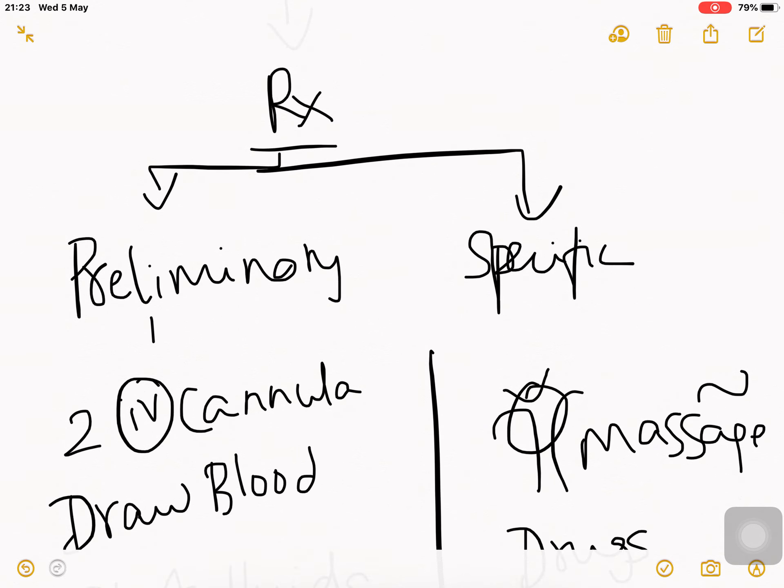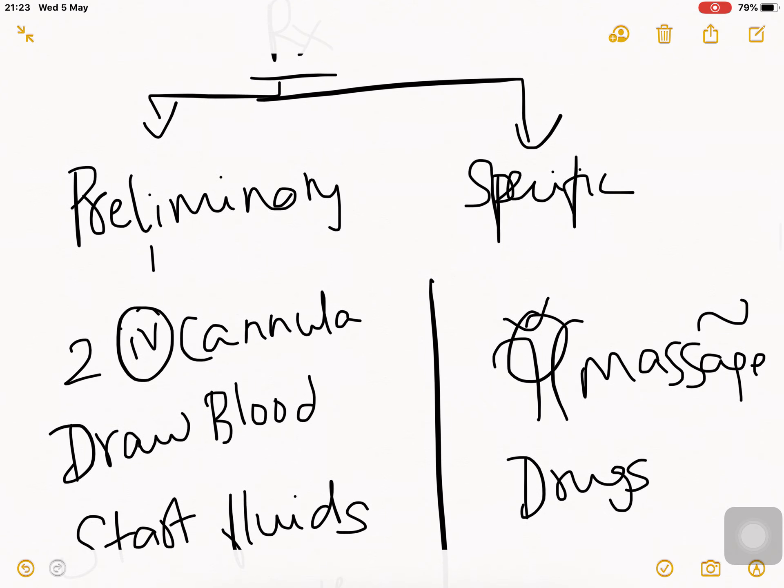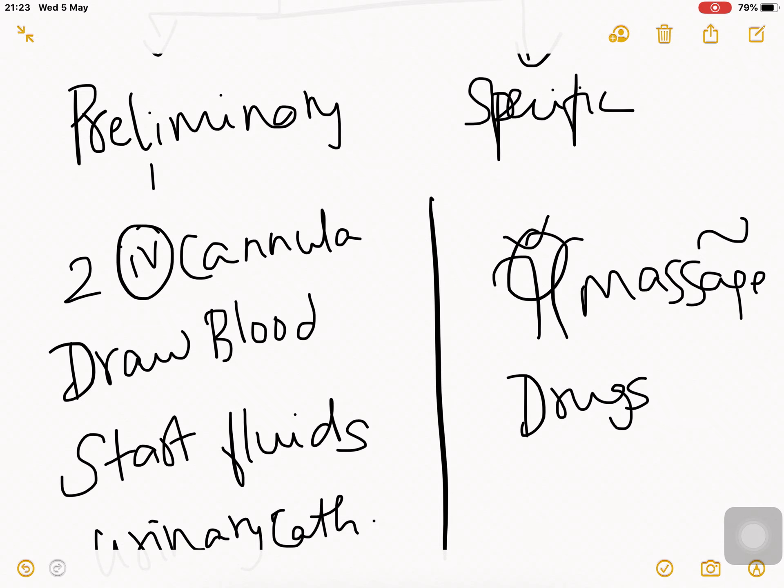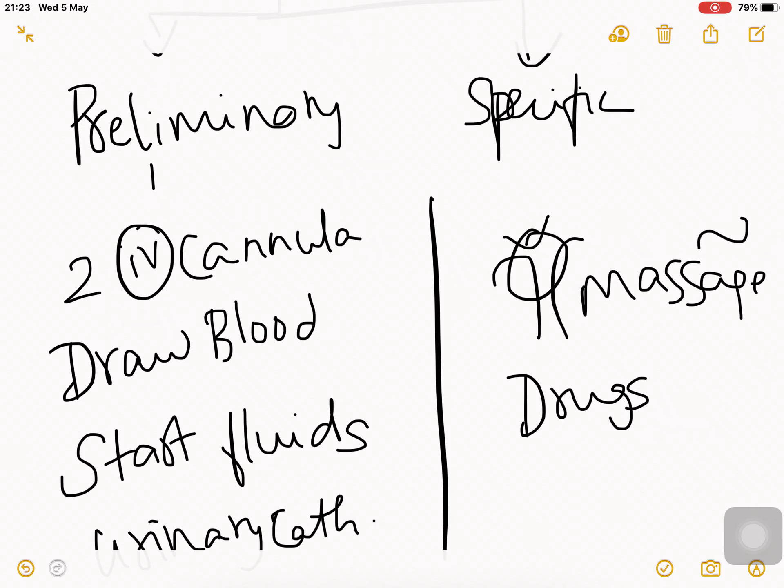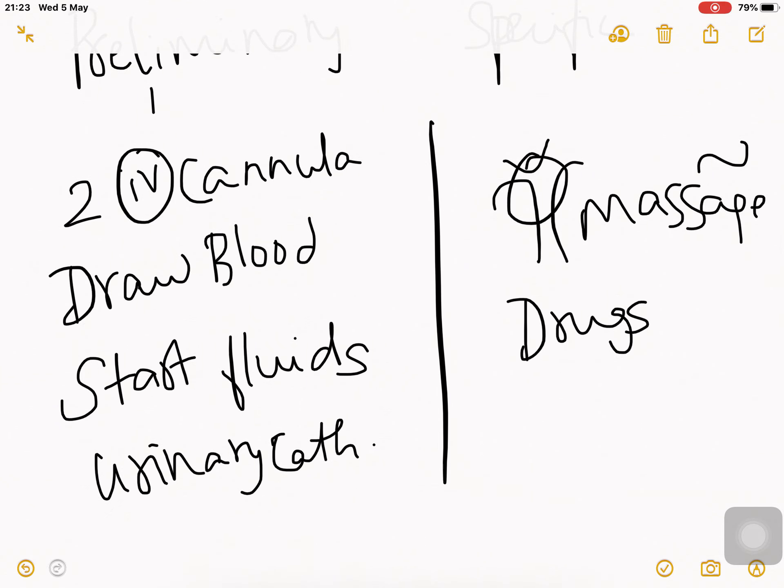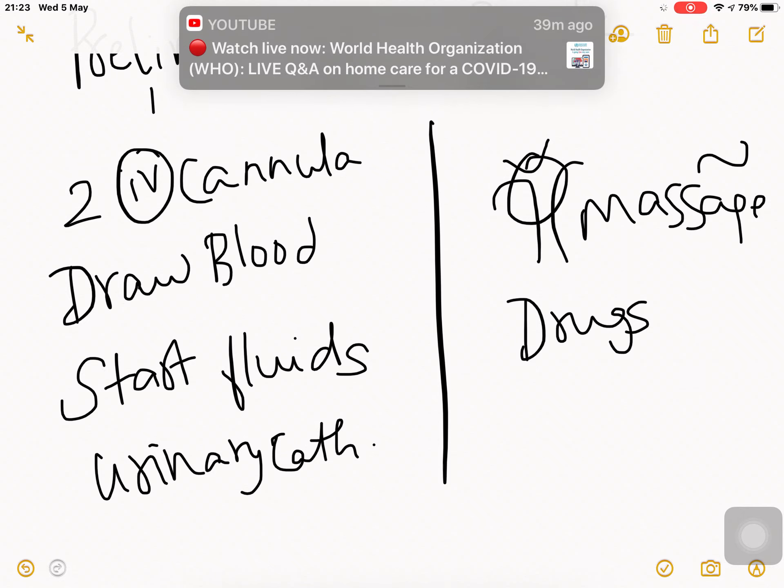For atonic PPH, there's preliminary and specific treatment. In preliminary, two IV cannulas must be inserted immediately. Draw blood, start IV fluids, give urinary catheterization. Draw blood for blood transfusion, start IV fluids - mostly crystalloids. Urinary catheterization is very important because once the bladder gets empty, the uterus can contract freely, and we can monitor urine output.